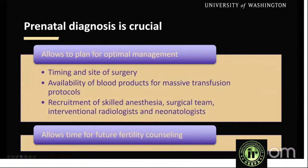Prenatal diagnosis is crucial because it allows planning for optimal management — deciding the timing and site of surgery. Blood products, skilled anesthesia, surgical and interventional radiology teams need to be ready. C-section is usually planned at 36 weeks of gestation to minimize risk of spontaneous labor. Maternal morbidity has been shown to decrease when these disorders are diagnosed prenatally. Fertility counseling also needs to be considered, as the uterus may not be saved.